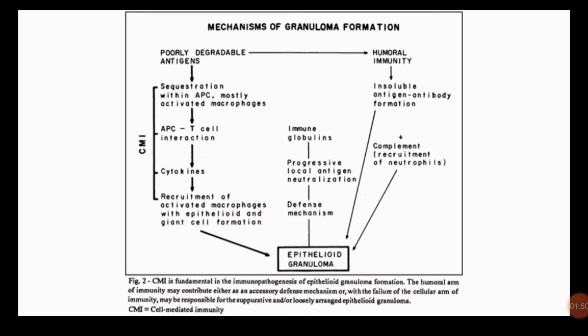Regarding humoral immunity, insoluble antigen-antibody formation leads to epithelioid formation. If the complement pathway is included, which includes the recruitment of neutrophils, the result is the same: epithelioid granuloma formation.